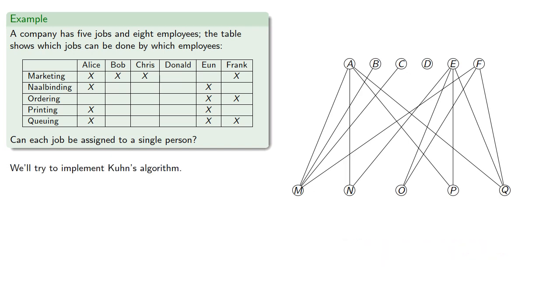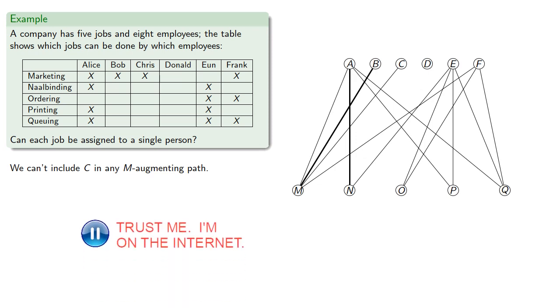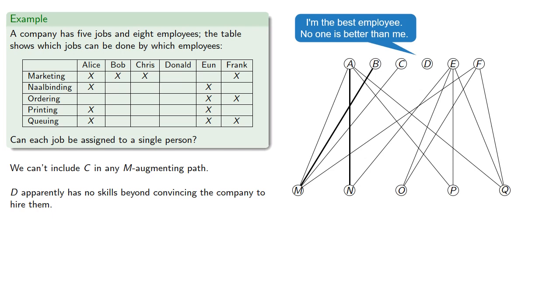We'll try to implement Kuhn's algorithm. We'll choose an edge, AM. We find an M-augmented path BM-MA-AN, so we switch edges. We can't include C in any M-augmenting path, so we go on to the next. D has apparently no skills beyond convincing the company to hire them.